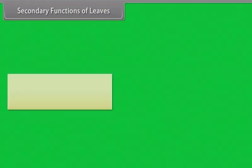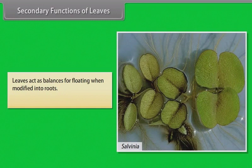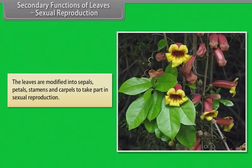Leaves act as floats for floating when modified into roots — example: Salvinia. Sexual reproduction: the leaves are modified into sepals, petals, stamens and carpels to take part in sexual reproduction.